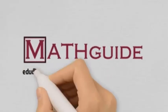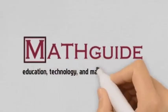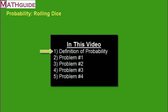This is MathGuide.com and my name is Mark Karadimos. In this video, we're going to look at probability problems as they apply to rolling dice. In our first section, we're going to talk about the definition of probability. In the remaining four sections, we're going to do a problem in each. Let's get started.